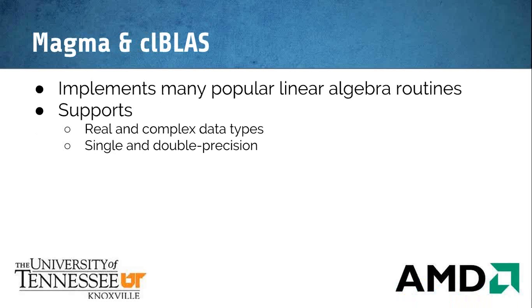MAGMA and CLBLAS are libraries used for linear algebra. MAGMA was developed by the University of Tennessee at Knoxville, and CLBLAS is maintained by AMD. You have hundreds of widely used linear algebra routines. These libraries support real and complex data types, single and double precision, and are really useful when you need to do linear algebra.